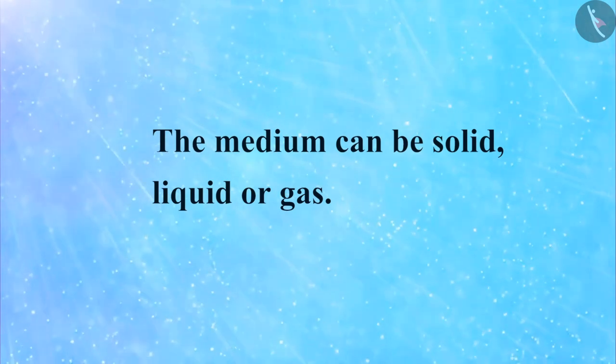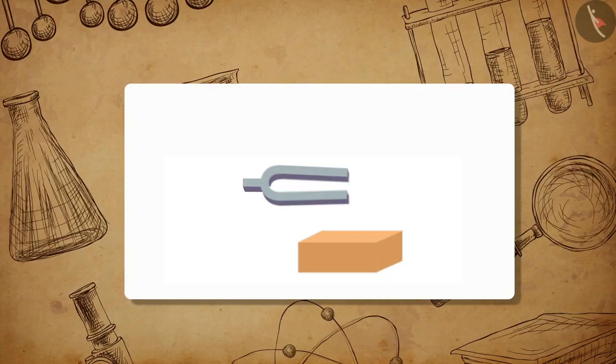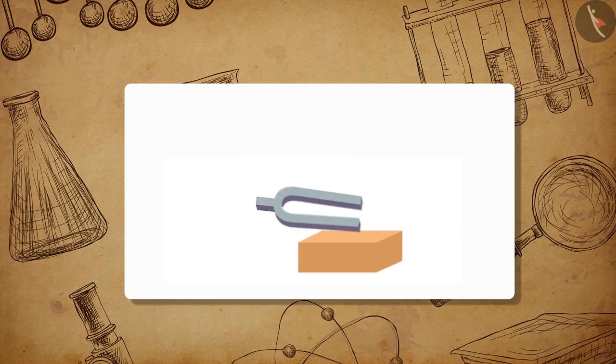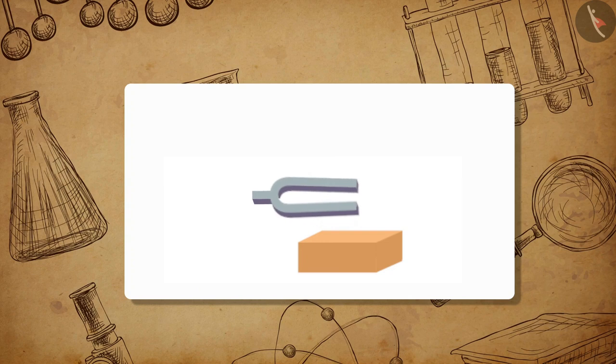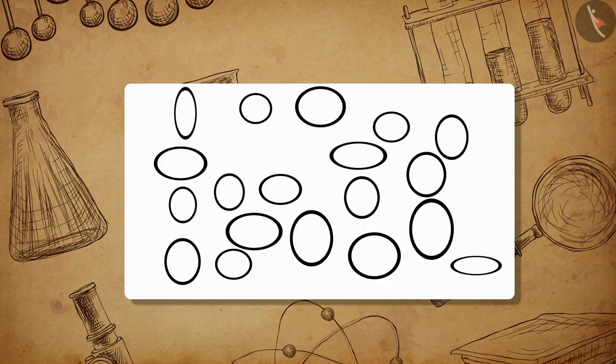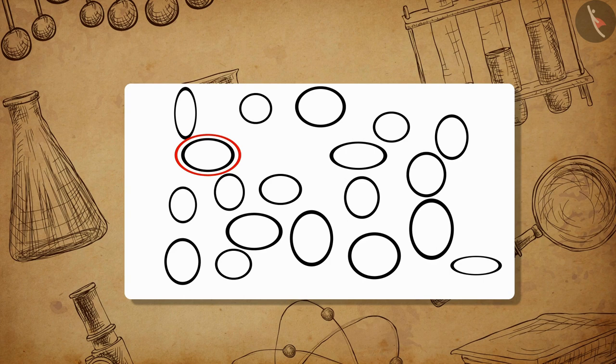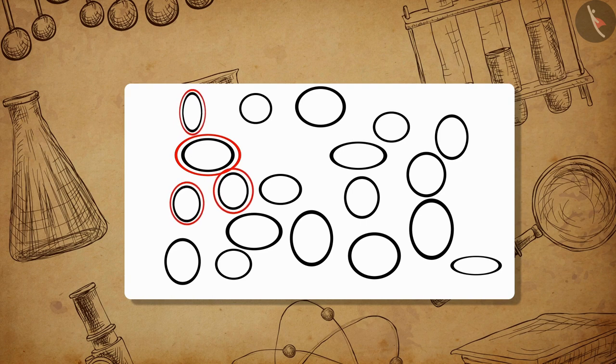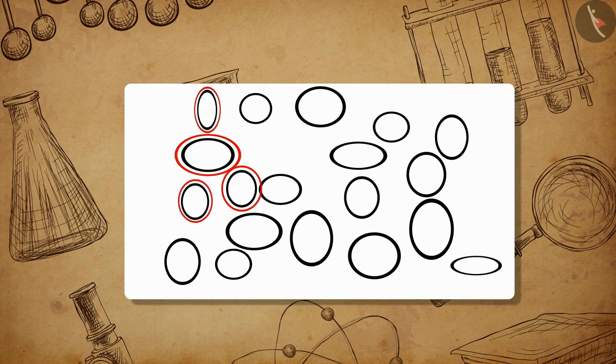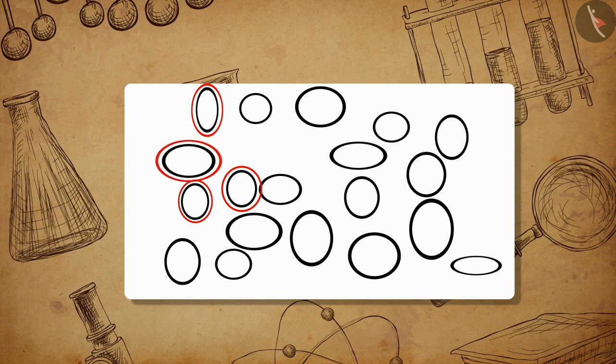As soon as an object is set on vibration, it starts the vibration of the particles around it. A particle of a medium in contact with a vibrating object gets displaced from its equilibrium position, then it exerts a force on its neighboring particles and displaces them from equilibrium. After displacing its neighboring particles, the first particle goes back to its original state of rest again.